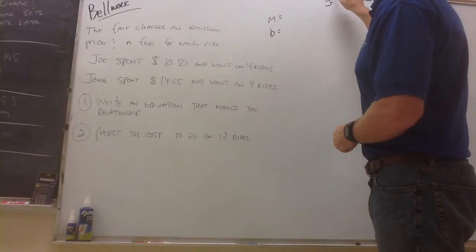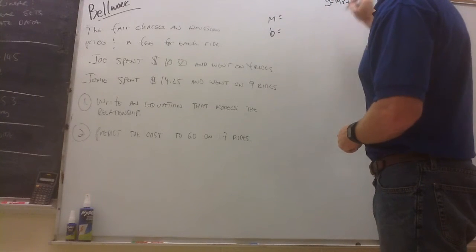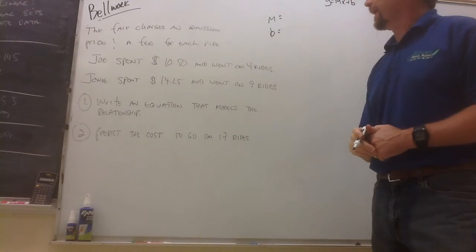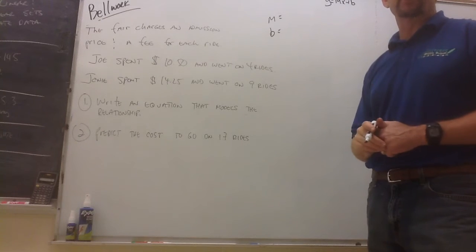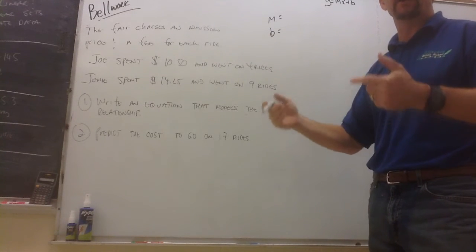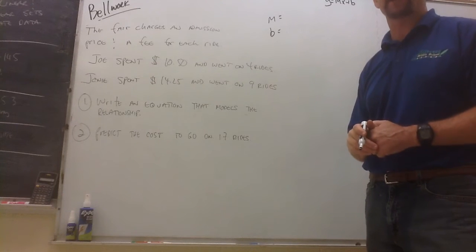Slope-intercept form, y equals mx plus b. Okay, so slope. To find the slope of a line, we would take the change in the y values and put it over the change in their x values.